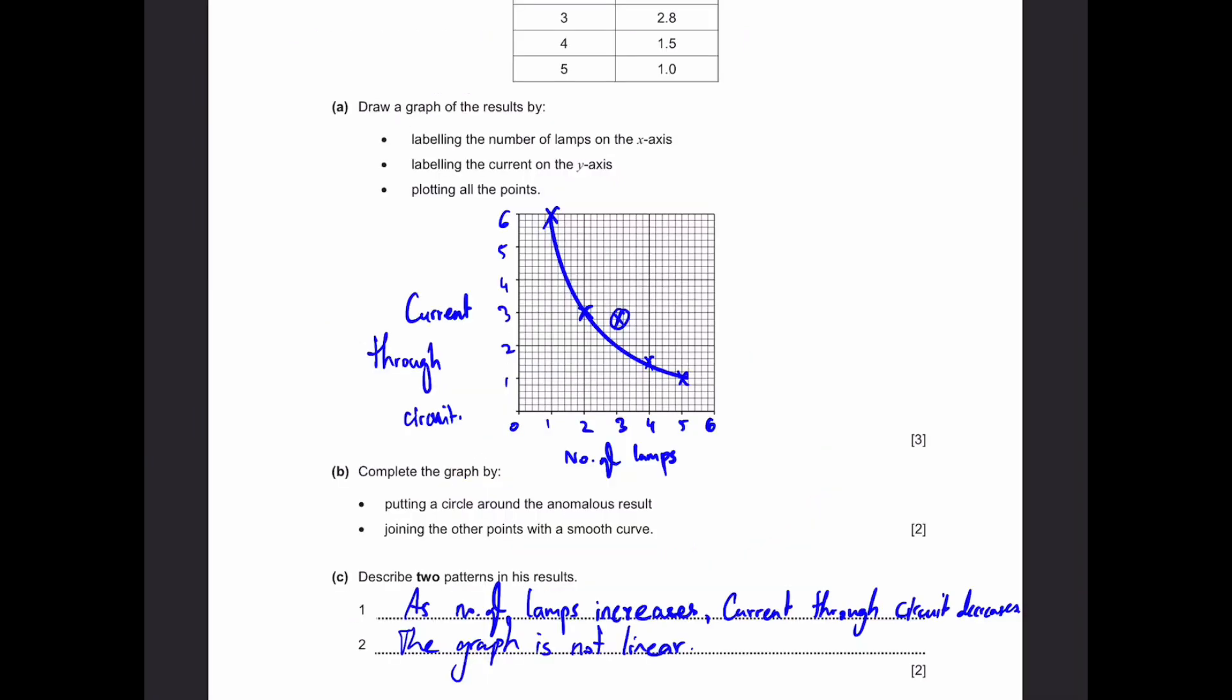Part C described two patterns in his results. So the first pattern is that as the number of lamps increases, the current through the circuit decreases, as we can see here. As it increases from 1 to 5 for number of lamps, the current through the circuit decreases from 6 to 1. And the second thing is that the graph is not linear, which means that this graph, we can see it's a curve. That means it's not linear. Because we need to see patterns, that's all we need to do. So the graph or the relationship is a curve. That's the answer.